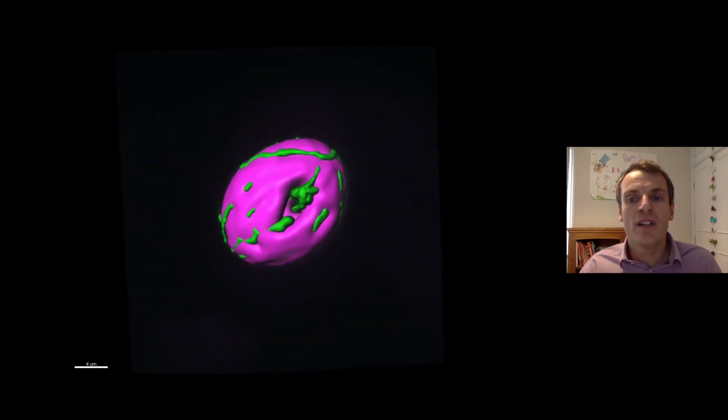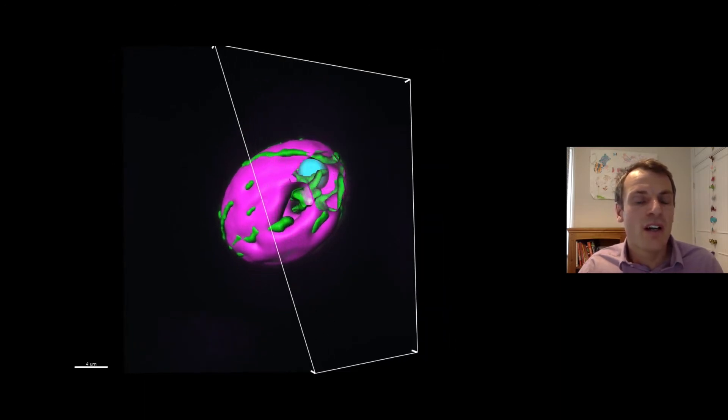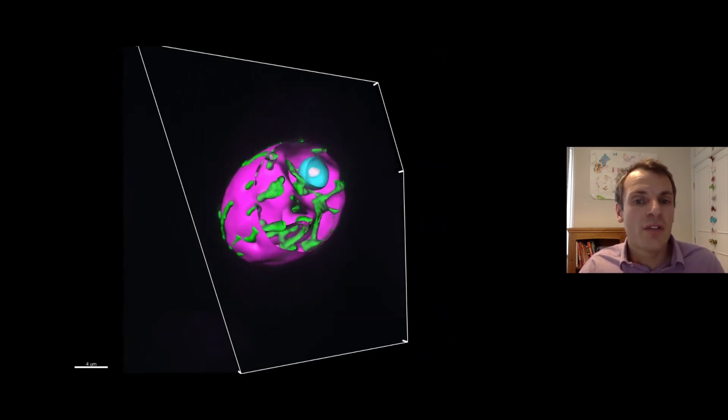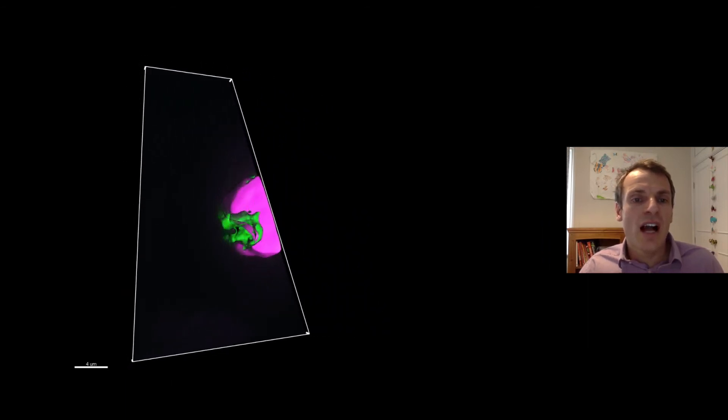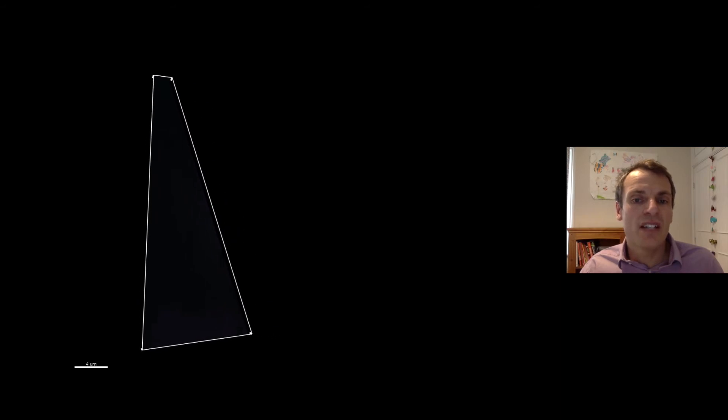CO2, carbon dioxide, fixed in the pyrenoid forms sugars that through respiration in the mitochondria provide energy for the cell and release oxygen into the atmosphere.